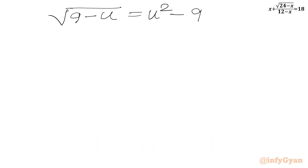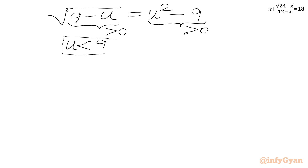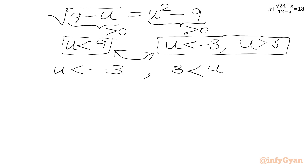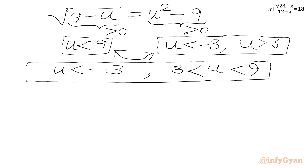Now I will write the domain of the equation. The radicand must be non-negative, so 9 minus u ≥ 0, meaning u must be less than 9. The RHS must also be non-negative, giving two conditions: u less than minus 3, or u greater than 3. Taking the intersection of u < 9 with these, we get two valid intervals: u less than minus 3, or u in the interval (3, 9).